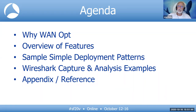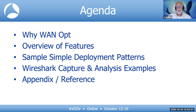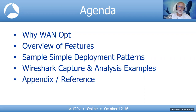In terms of an agenda, we're going to start out talking about why you would need WAN optimization. We'll then cover an overview of the features. We'll look at some very simple sample deployment patterns. Then we've got a little bit to show with Wireshark, but not as much as I was hoping. At the end of this deck, when it gets published to the retrospective site, you'll be able to use the appendix — there's reference material with more detail about typical features of WAN optimization.